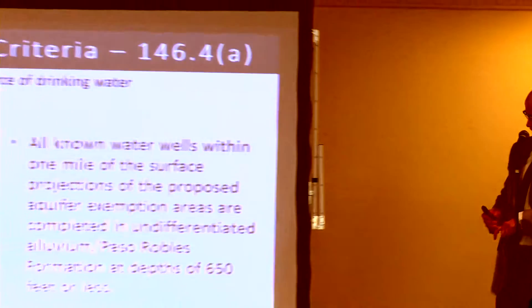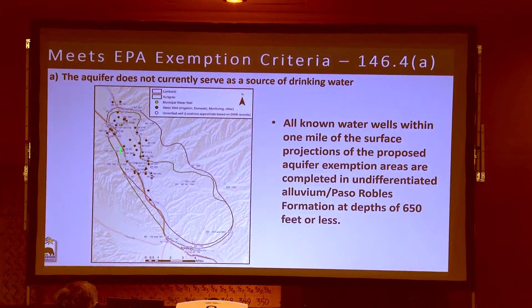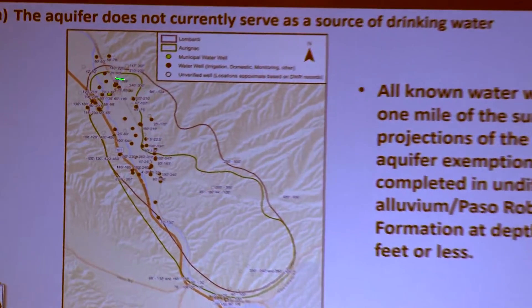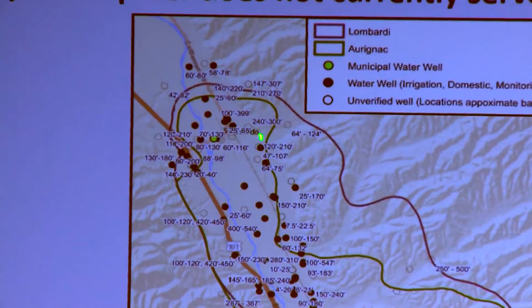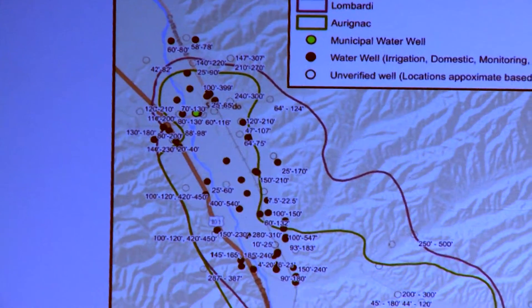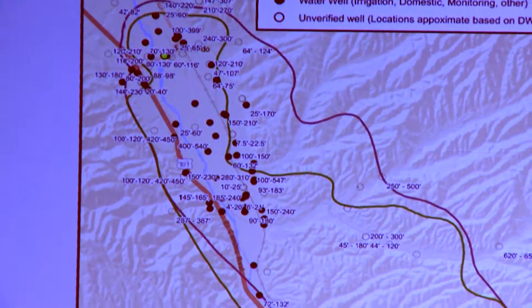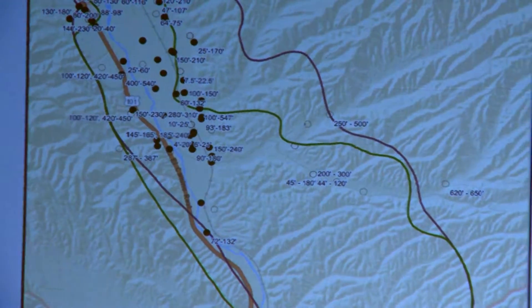Those San Ardo municipal water wells are screened to depths of about 80 to 130 feet in the Paso Robles formation. There is more than 2,000 feet of vertical separation between the San Ardo Water District's wells and the Lombardia sands at that location. The Central Coast Regional Water Quality Control Board has had contact with the San Ardo Water District, and the district confirms they do not intend ever to tap into the Lombardia or the Aranac. This map shows all known water wells within the area — all drilled to relatively shallow depths into the uppermost Paso Robles formation.